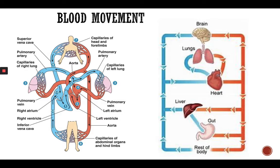Blood gives oxygen and essential nutrients to organs, and takes the waste materials and excludes them from our organisms. It starts from the left ventricle — the aorta emerges from the left ventricle, takes the oxygenated blood around our body, and then comes back to the right atrium and right ventricle. From the right ventricle, the pulmonary artery goes out from the heart to our lungs, gets oxygen, and gives off carbon dioxide. This is how blood is actually moving around our body.